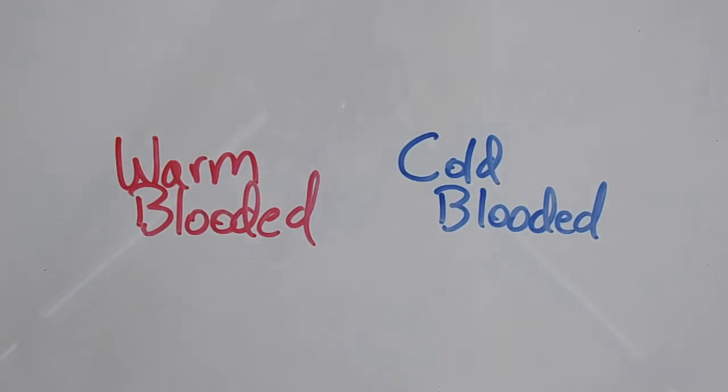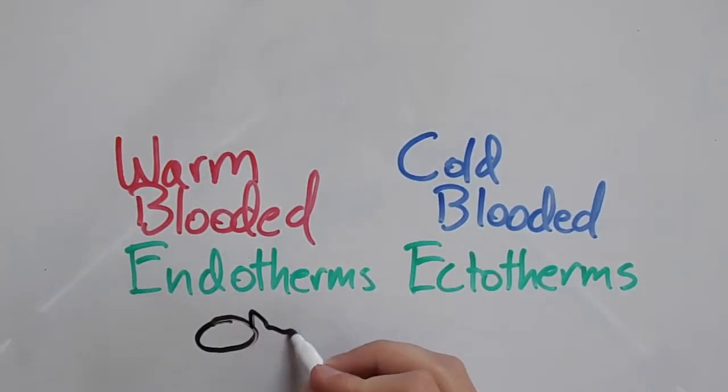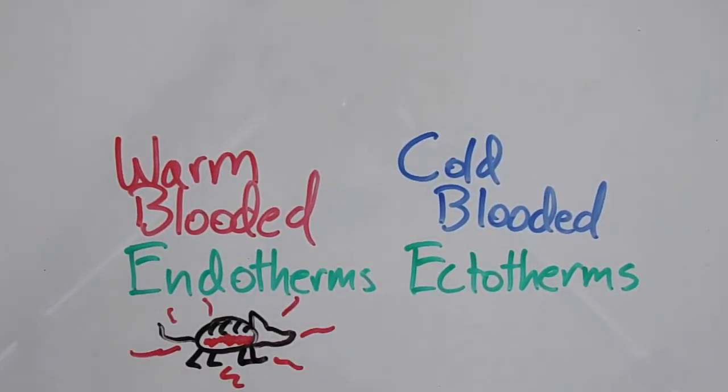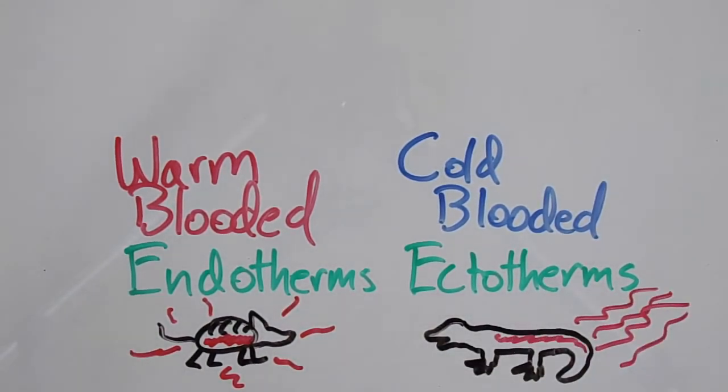The better words to use are endotherms and ectotherms. Warm-blooded animals, or endotherms, can generate their own heat from their metabolism, like birds and mammals. Cold-blooded animals, or ectotherms, need to obtain heat from their environment, like fish, reptiles, and amphibians.